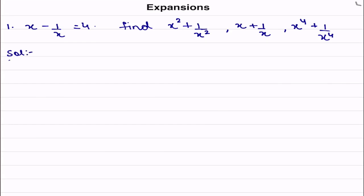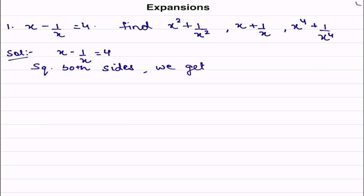It is given that x minus 1 by x is equal to 4. What we will do is square both sides. After squaring both sides, we get x minus 1 by x, whole square, is equal to 4 squared.